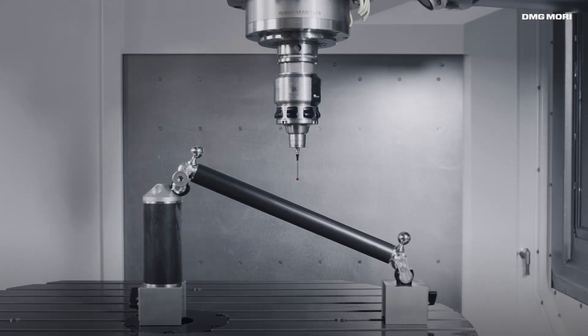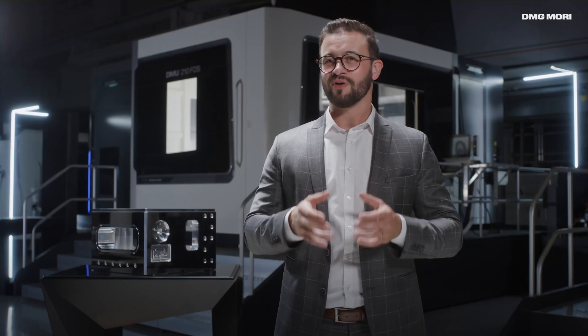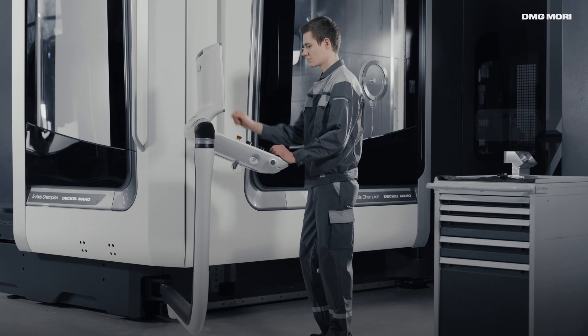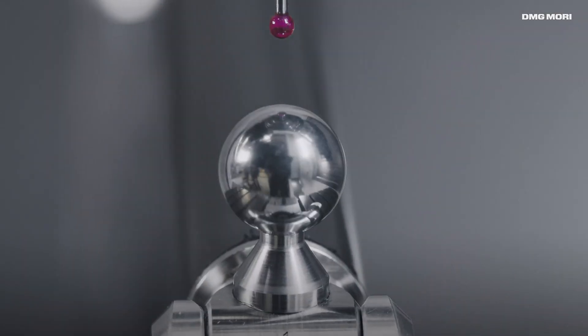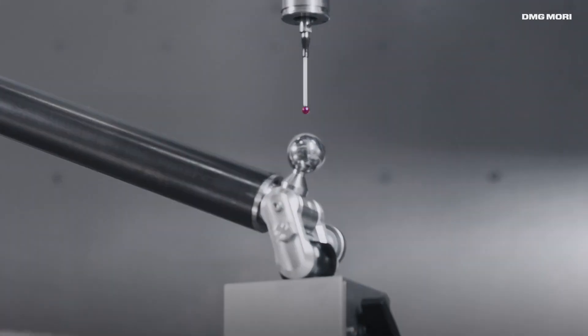The VCS complete technology cycle makes it possible to determine the machine's accuracy at the touch of a button, assess deviations, and eventually compensate them.